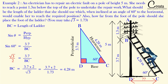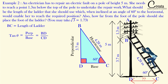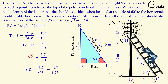Next, we have to find CD — the distance of the base of the ladder from the base of the pole. BD (perpendicular) = 3.7 m. The relation between perpendicular and base is tan theta. So tan 60° = BD / CD. From the trigonometric ratio table, tan 60° = √3. Putting BD = 3.7 and solving: CD = 3.7 / √3 = 3.7 / 1.73 = 2.14 meters. The electrician should place the foot of the ladder 2.14 meters from the pole.